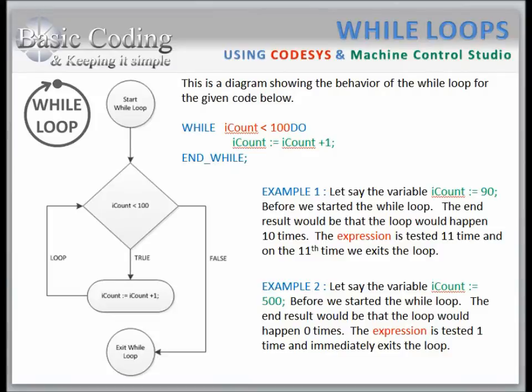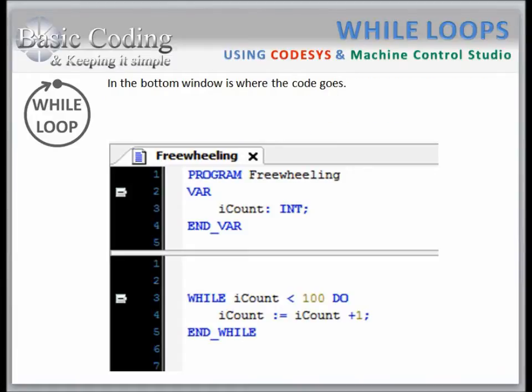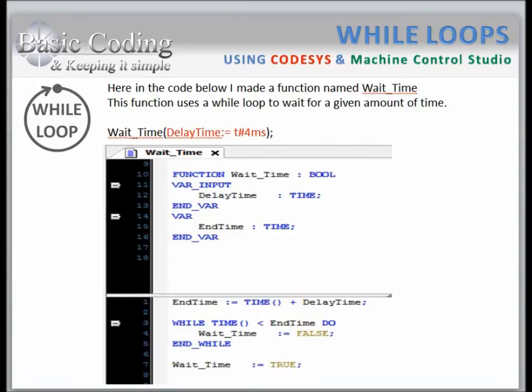This is how your code might look in Machine Control Studio for our given example. You will see two windows here. The top window is where the variables are declared. Here you can see the variable iCount. It is of type INT and has no default value. Because it has no default value, it could be anything on power up, but most likely a value of zero. In the window below is where your code goes, and you can see our example for the while loop.